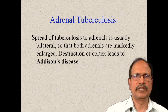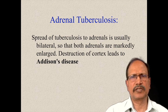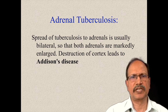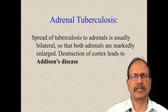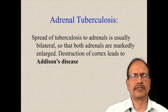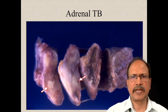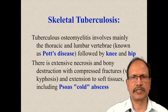Adrenal tuberculosis: spread of tuberculosis to adrenals usually occurs bilaterally and is associated with marked destruction of the adrenals, which may present as Addison's disease. In earlier times, when tuberculosis was rampant, the most common cause for Addison's disease was tuberculosis. You can see the cross-section of adrenals with granulomas and caseous necrosis.